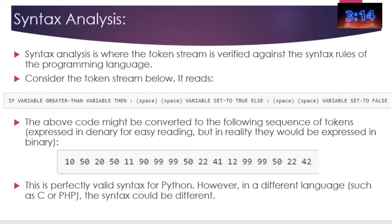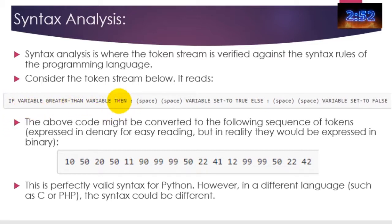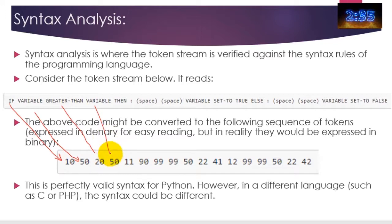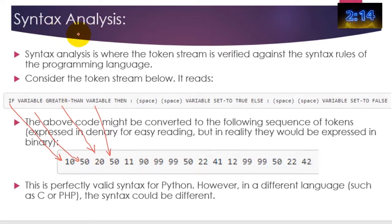Now it's passed on to syntax analysis. Syntax analysis is where the stream of tokens identified in the earlier stage is then checked to see if the order in which everything appears makes sense. You can see here: if a variable is greater than a variable, then do this. Syntax analysis checks to see whether this makes sense, and it does that by converting each token into numbers — so 'if' becomes number 10, the variable becomes number 50, 'greater than', a variable, and so on. This is checking to see whether the code is in the right order.